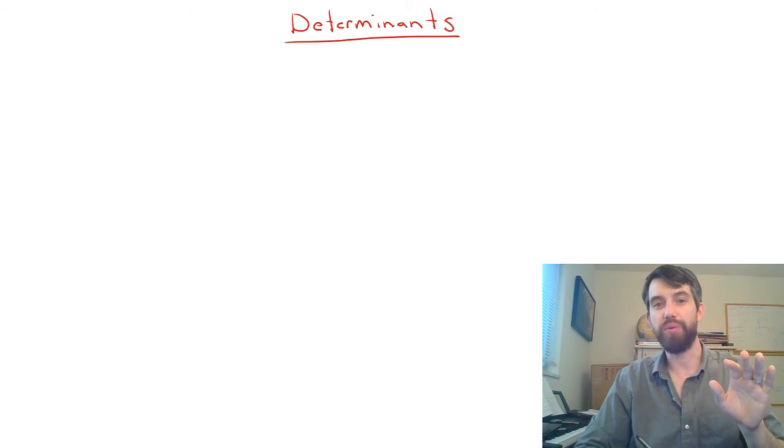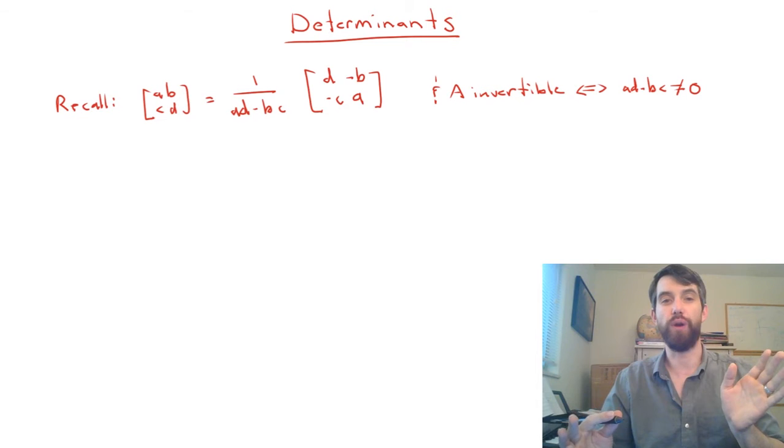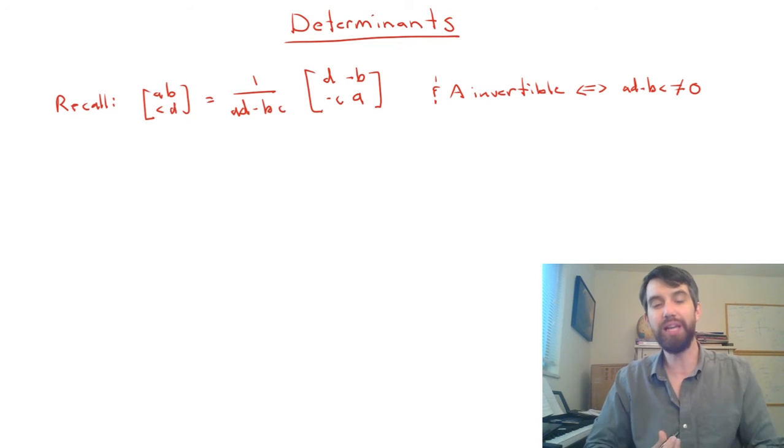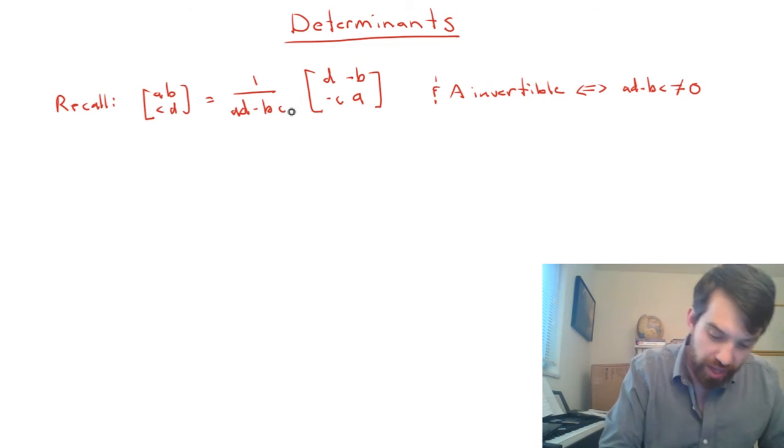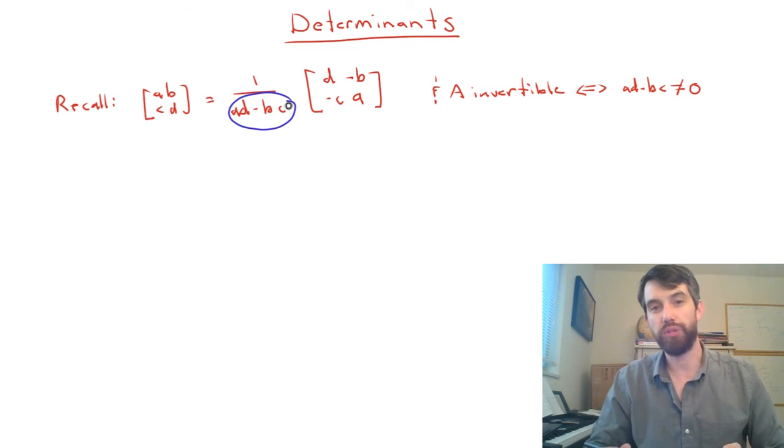Remember back when we were talking about inverses of matrices, we saw that in the 2x2 case we had this really nice formula for it. For a 2x2 matrix you could go and do this particular formula, and you further got the fact that A was invertible if and only if the denominator, this 1 over AD minus BC, was going to be non-zero.